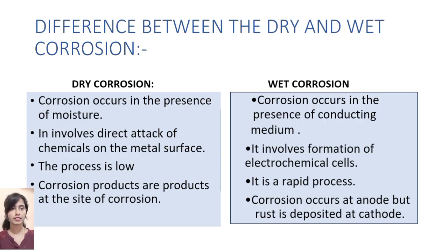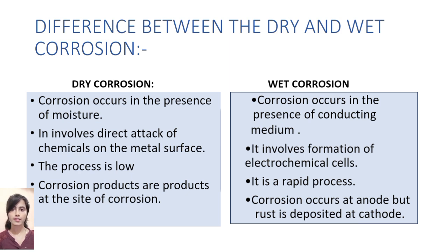Here is the difference between dry and wet corrosion. Dry corrosion occurs in the absence of moisture, while wet corrosion occurs in the presence of a conducting medium. Dry corrosion involves a direct attack of chemicals on the metal surface, while wet corrosion involves the formation of electrochemical cells. Dry corrosion is a slow process; wet corrosion is a rapid process. In dry corrosion, corrosion products are deposited at the site of corrosion, whereas in wet corrosion, corrosion occurs at the anode but the product is deposited at the cathode.